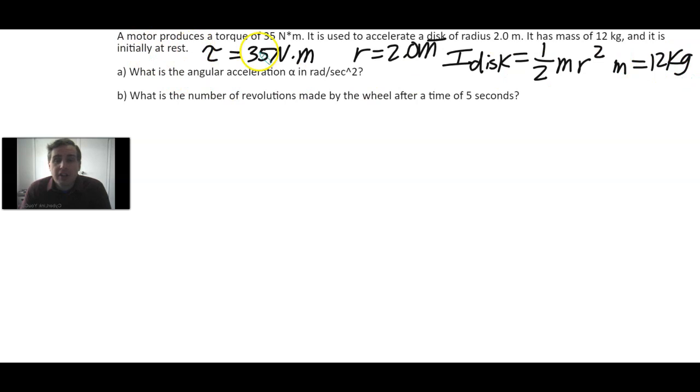And it's initially at rest, so we're assuming that ω₀ equals zero radians per second. That's the initial angular velocity.